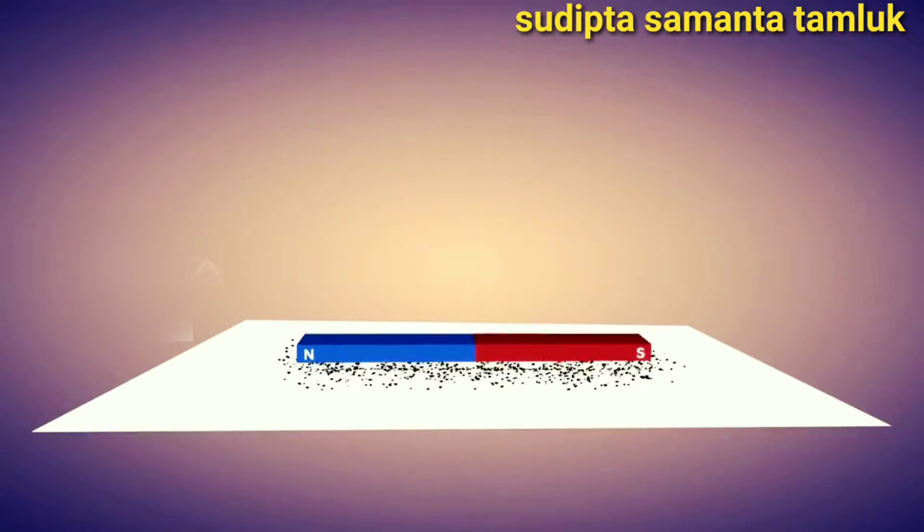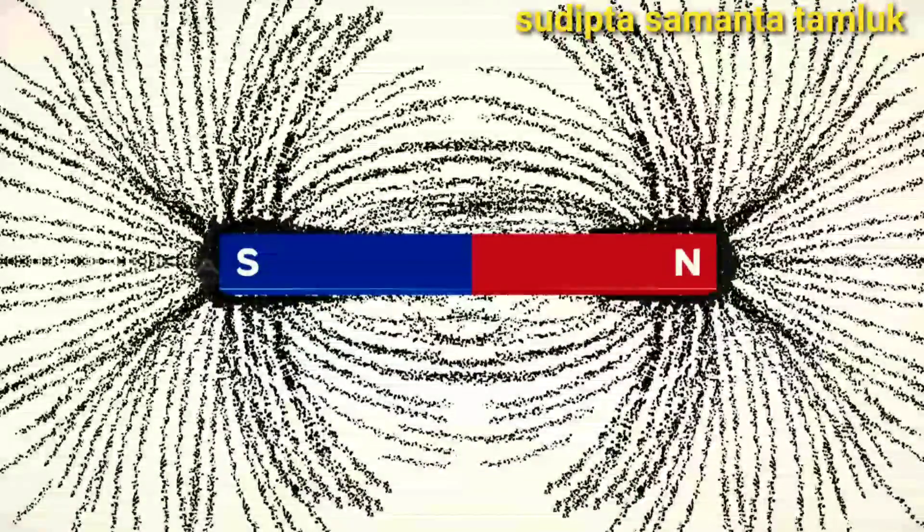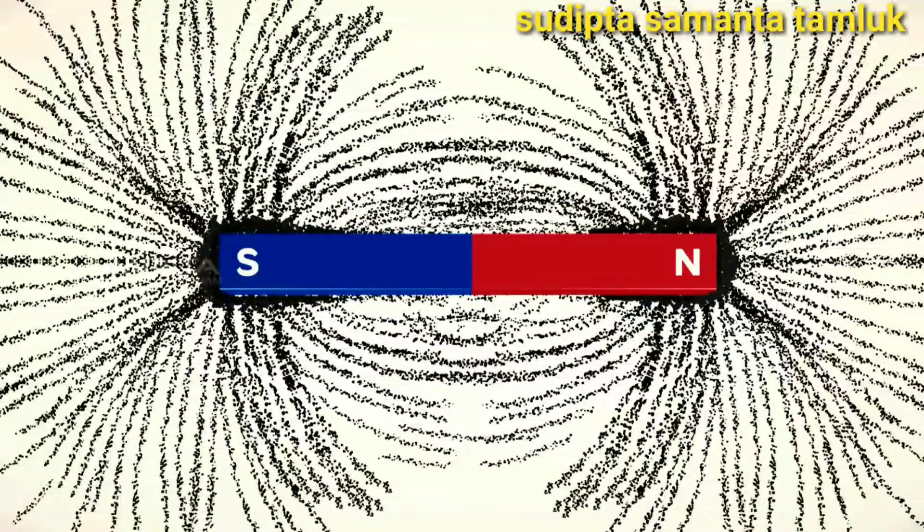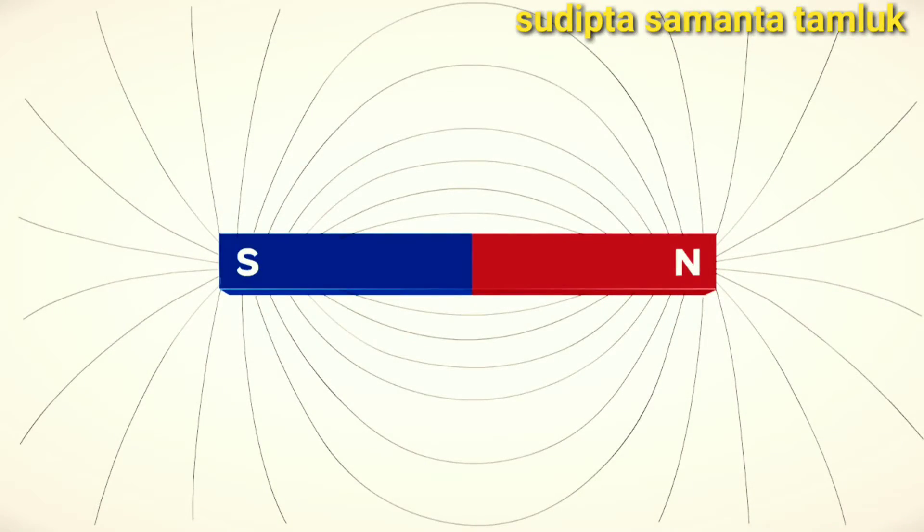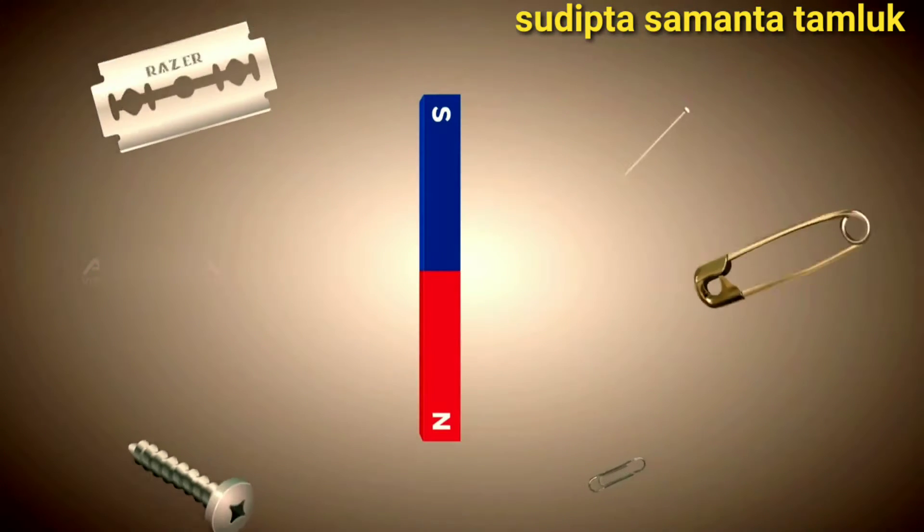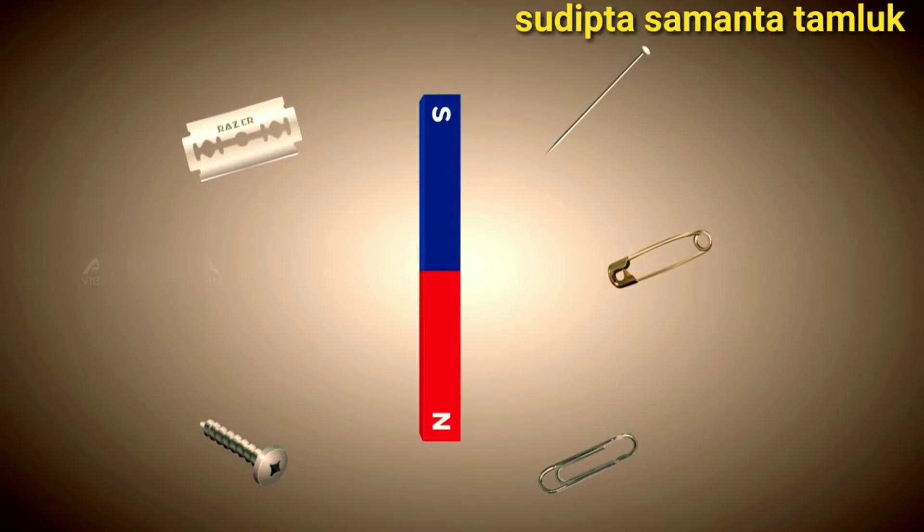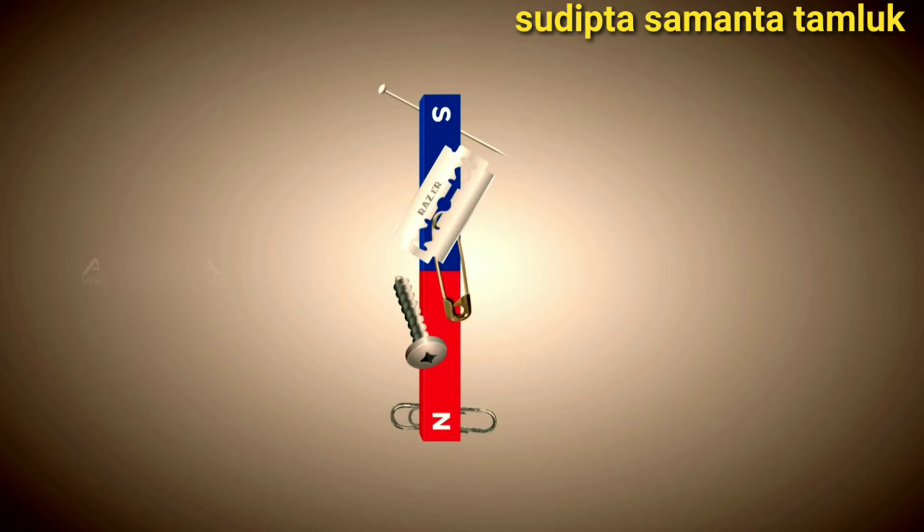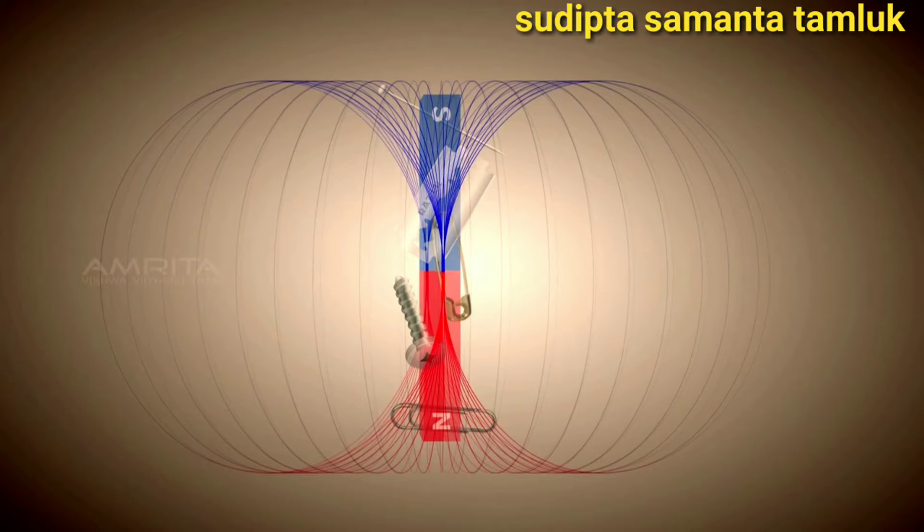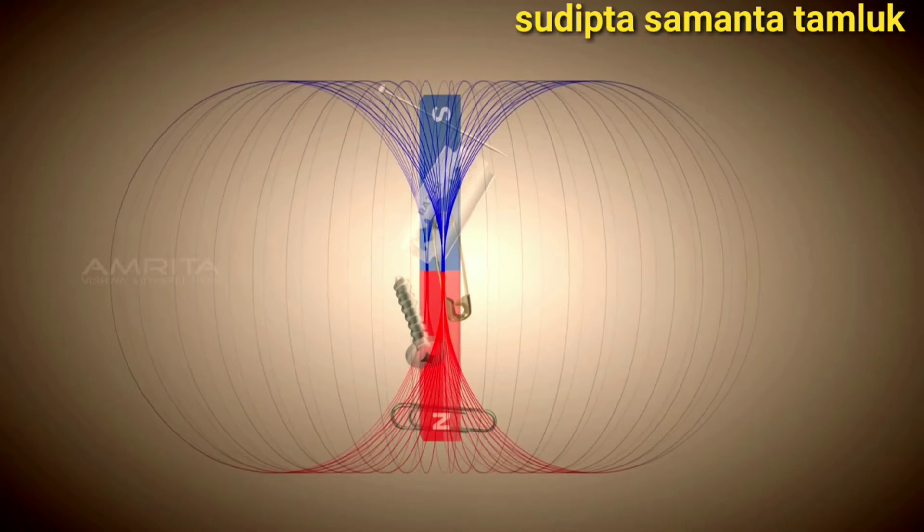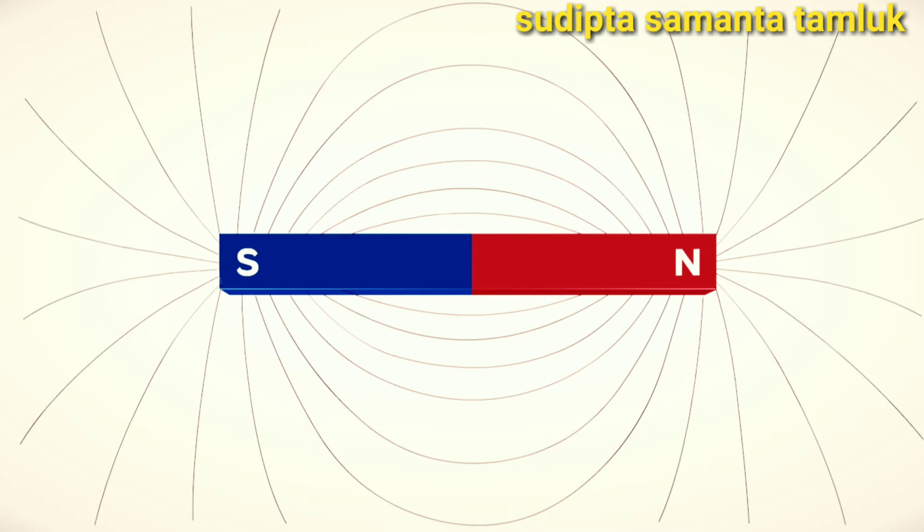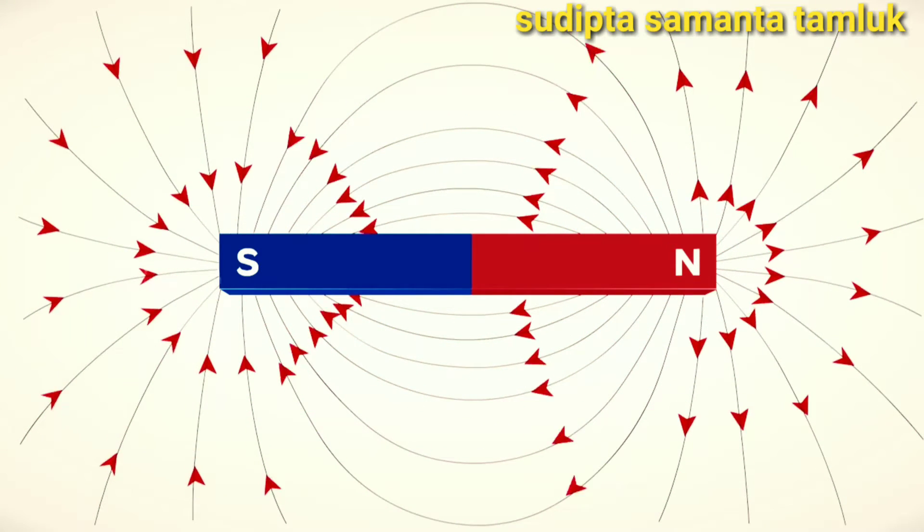When a magnet is placed on a piece of paper and the paper is gently tapped, the iron fillings are arranged in a particular manner. Such a pattern of arrangement shows the magnetic lines of force. These lines indicate the strength and direction of a magnetic field. We have seen previously that magnetic materials are attracted to a magnet. The region around the magnet where the force of attraction can be detected is called the magnetic field. The direction of the magnetic field is from the north pole to the south pole.